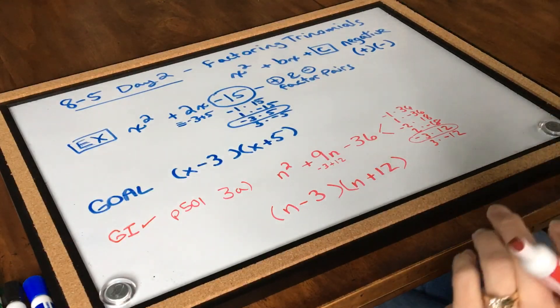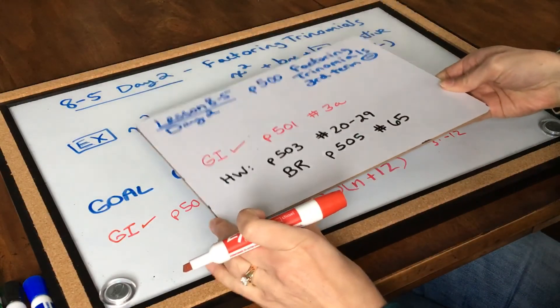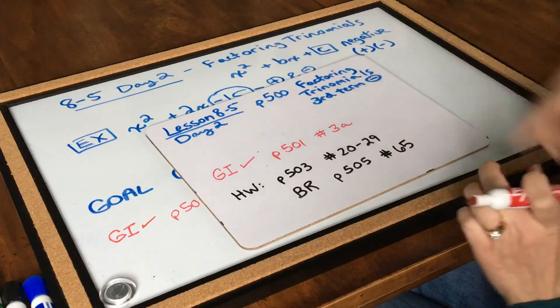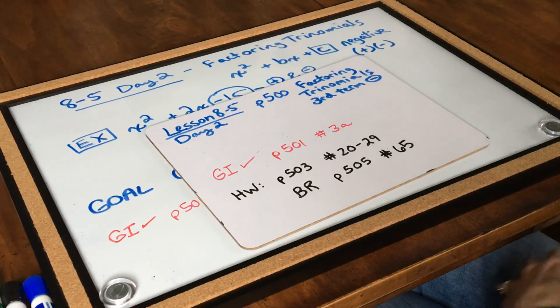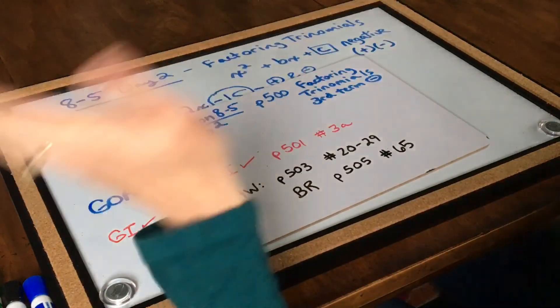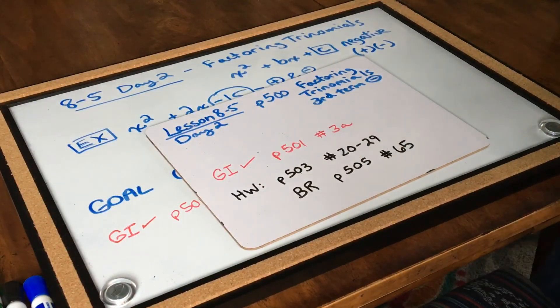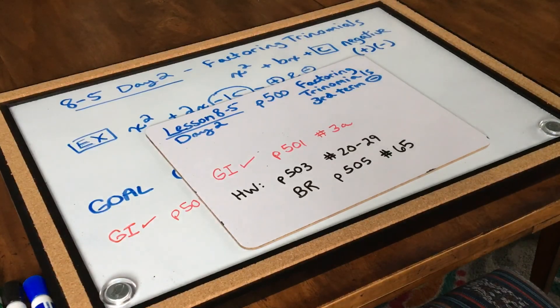Alright. So now it's time to try your homework. So your homework is page 503, numbers 20 to 29. And your bell ringer is page 505, number 65. Bye 8th grade. Have a great weekend.